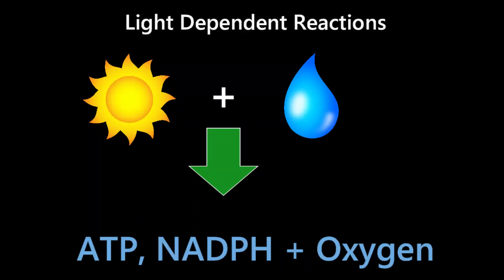At the end of the light-dependent reactions, plants have produced NADPH and ATP, as well as an oxygen byproduct.